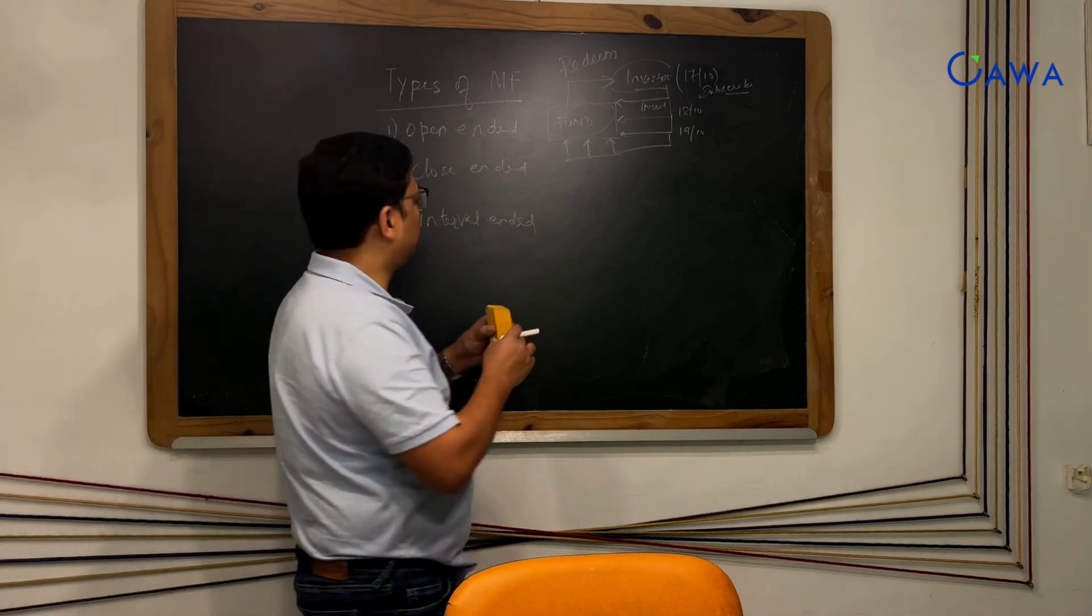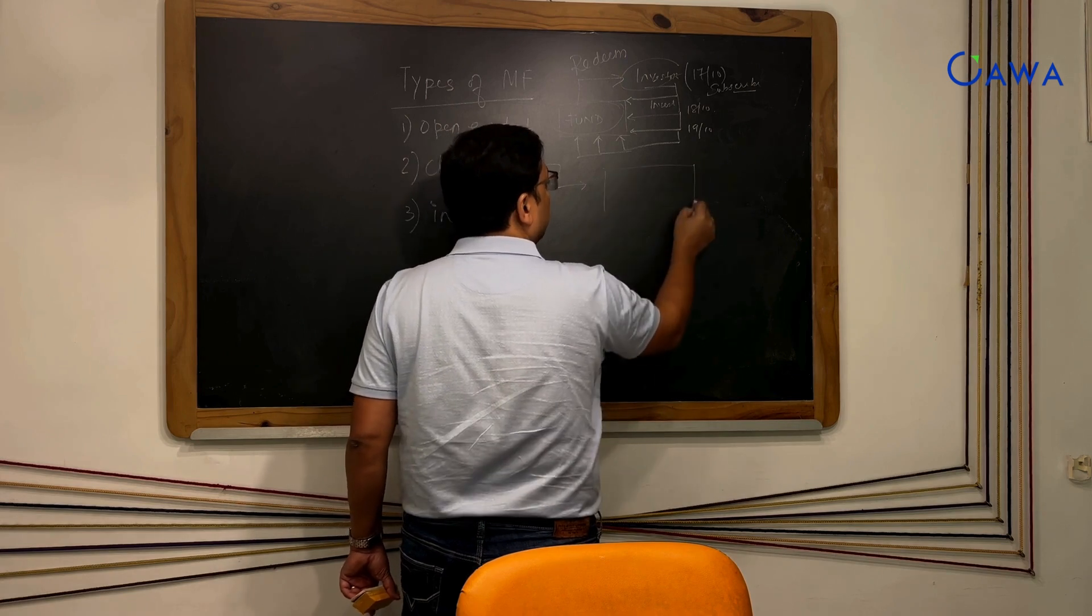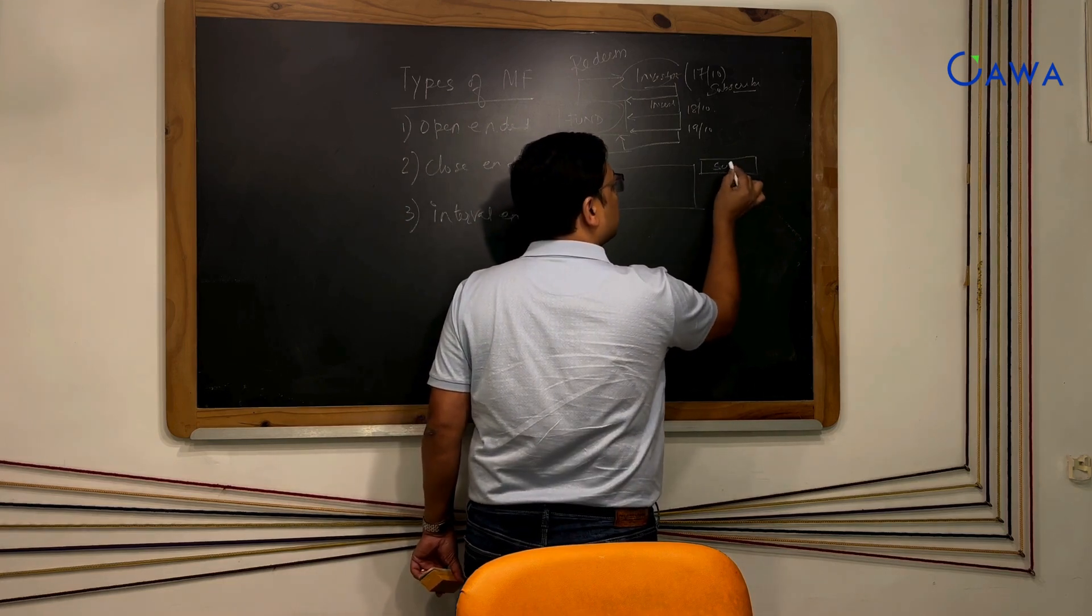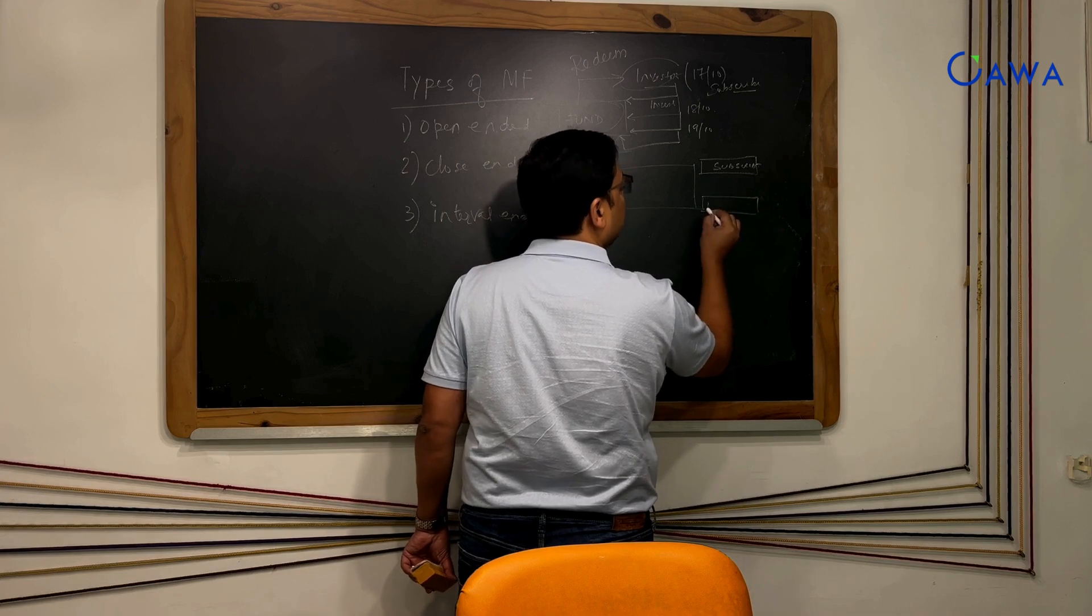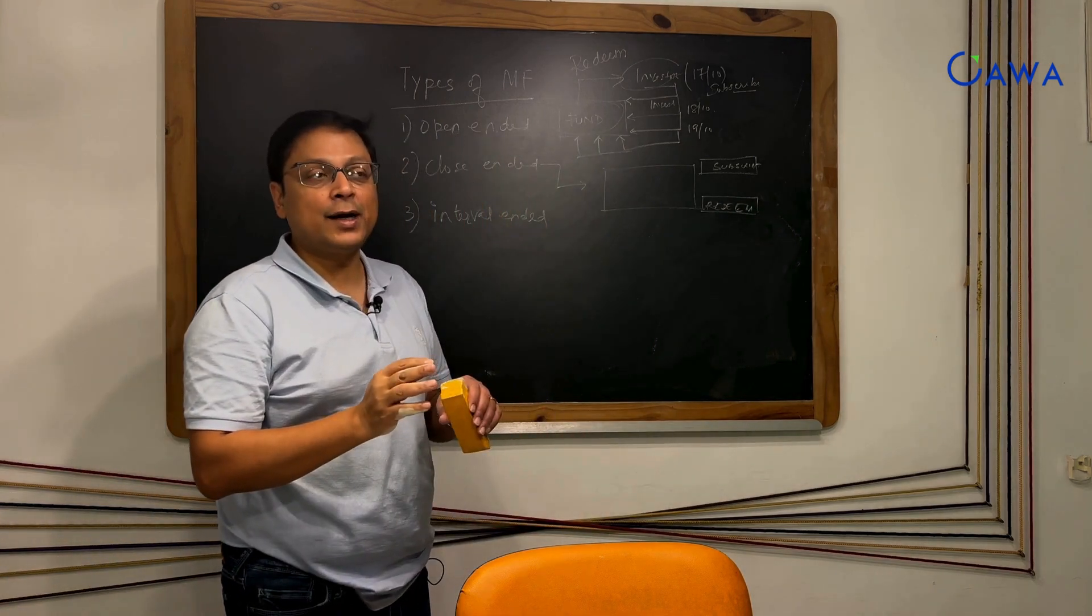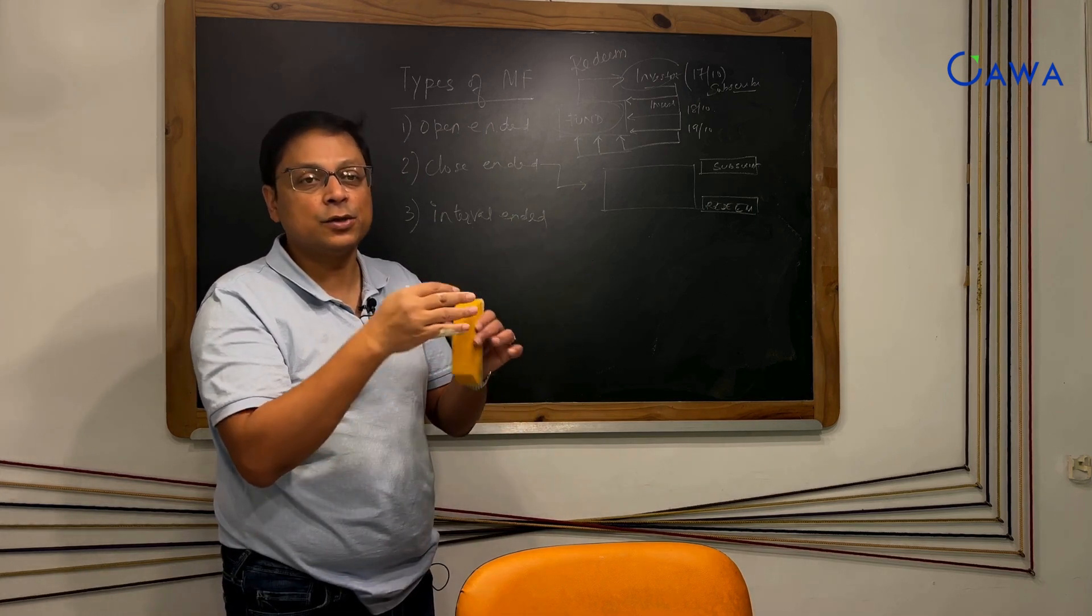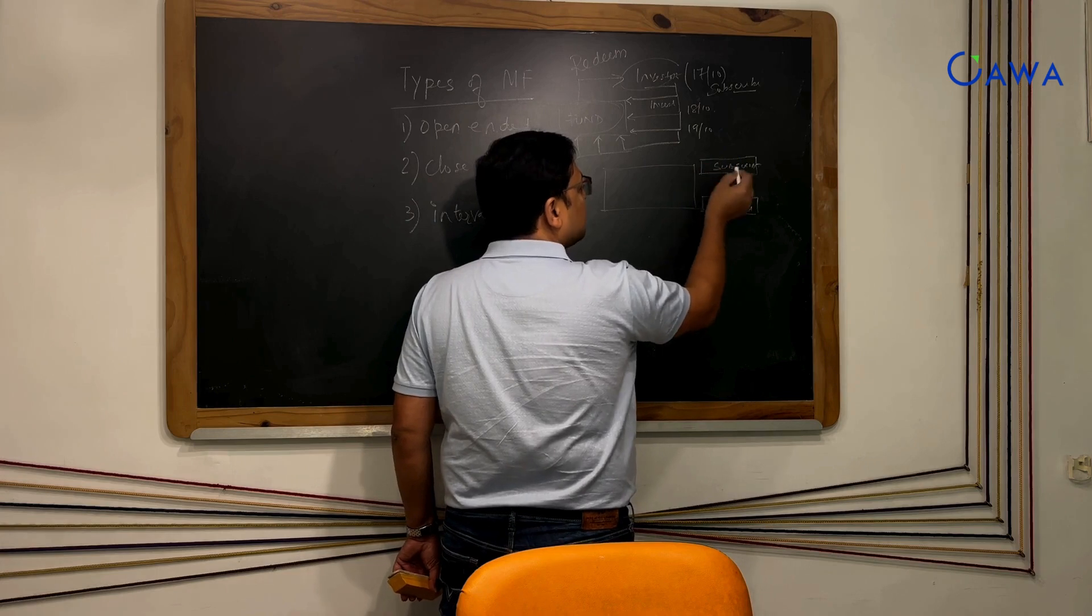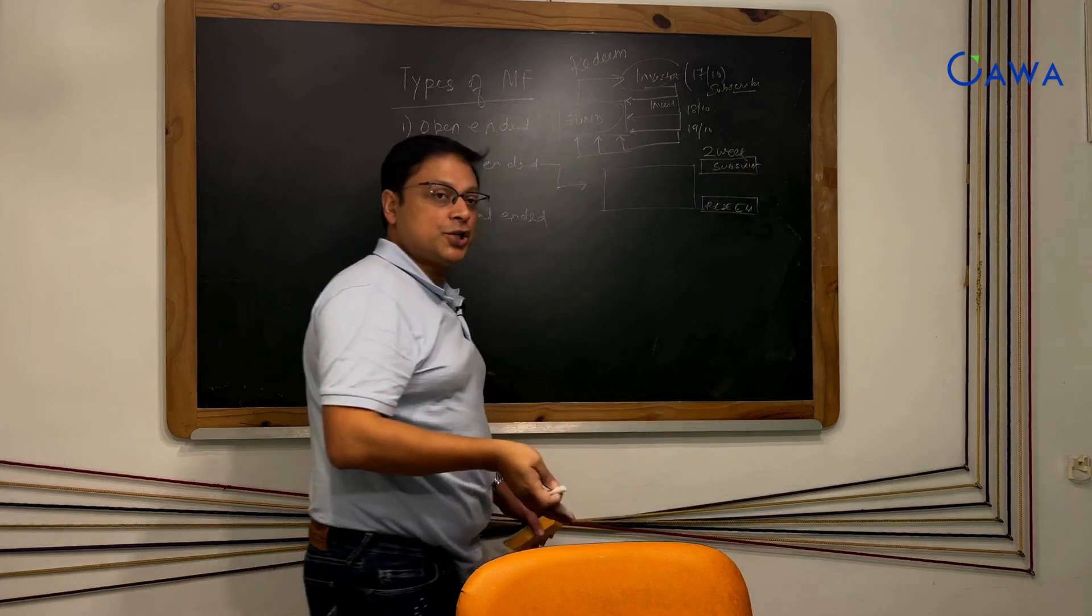The second kind of fund is called close-ended. Close-ended fund has very specific time periods when you can subscribe, and then there are very specific time periods where you can redeem. It's not that if you want to invest today, if it is not available for investment at that time, it is not available. Generally these closed-ended funds have a very specific period, maybe a two-week period when they are launched initially.